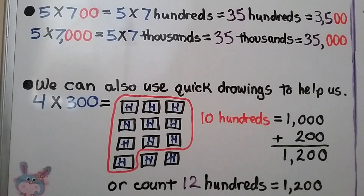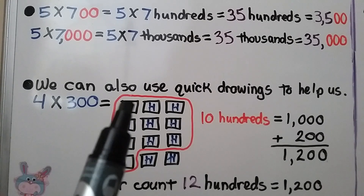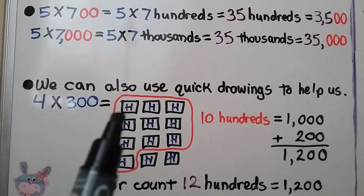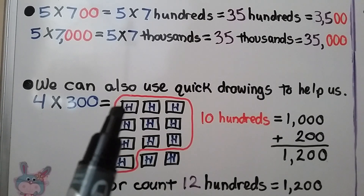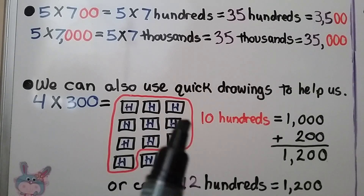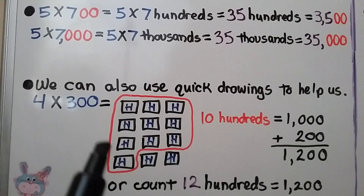We can also use quick drawings to help us. For 4 times 300, we can make little boxes with H for 100. We can put 100 in them. We have groups of 300: one, two, 300, then another one, two, 300, and another one, and another one. So we have four groups of 300.